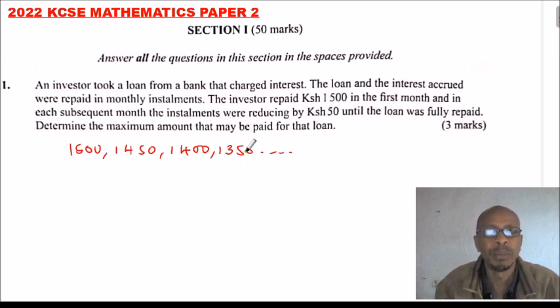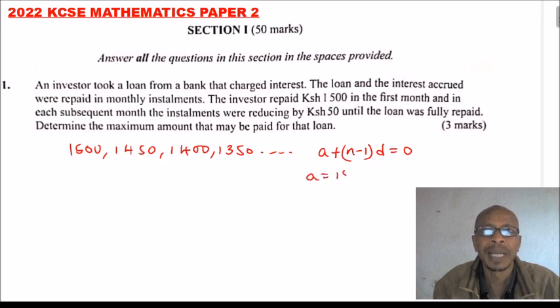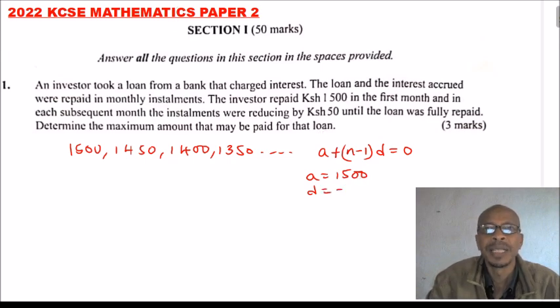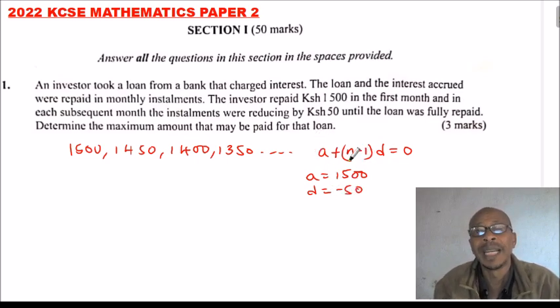By the time the loan is repaid, the last term will be zero when it is fully repaid. So we can say the nth term, a + (n-1) multiplied by d, is zero. We have the first term a is 1500. The common difference d equals minus 50 because it is reducing. So we can be able to find n using this equation.